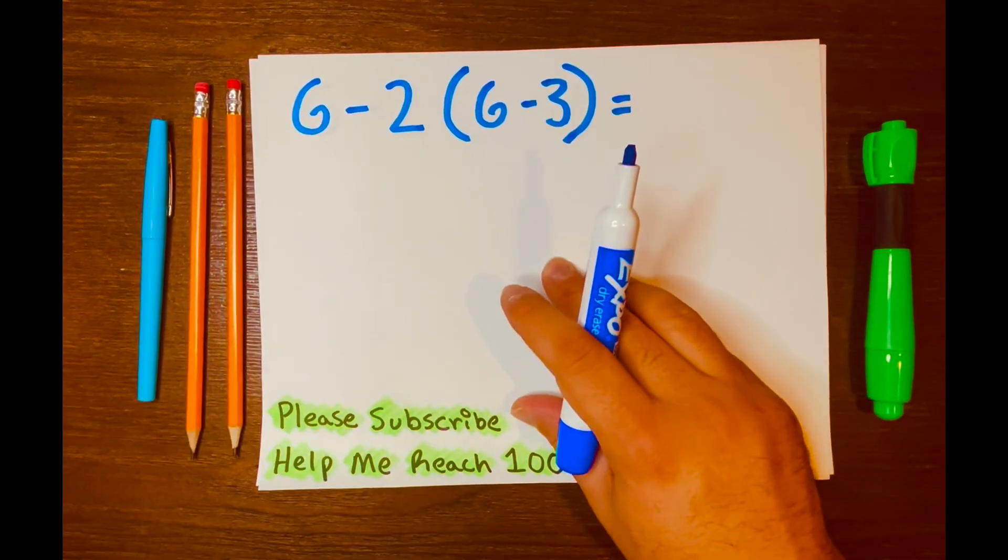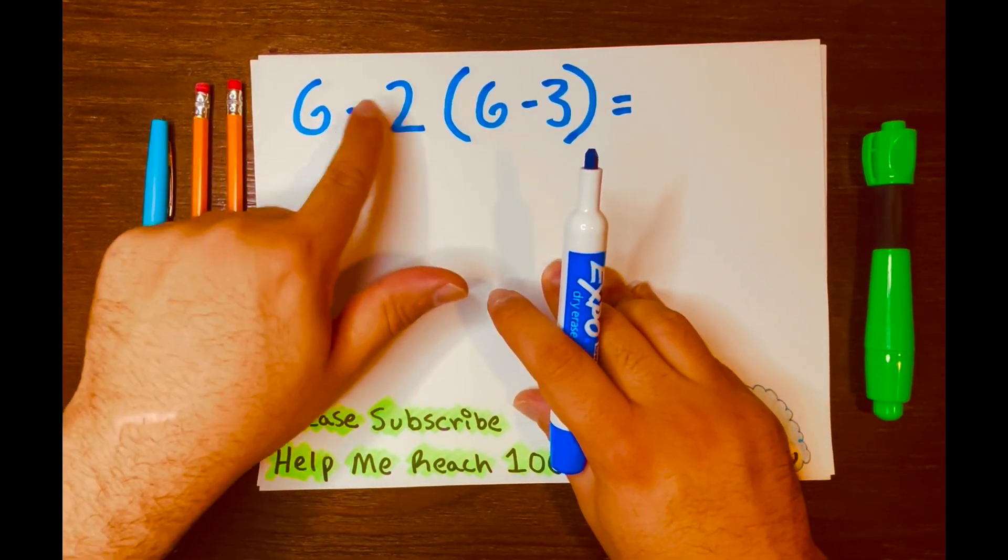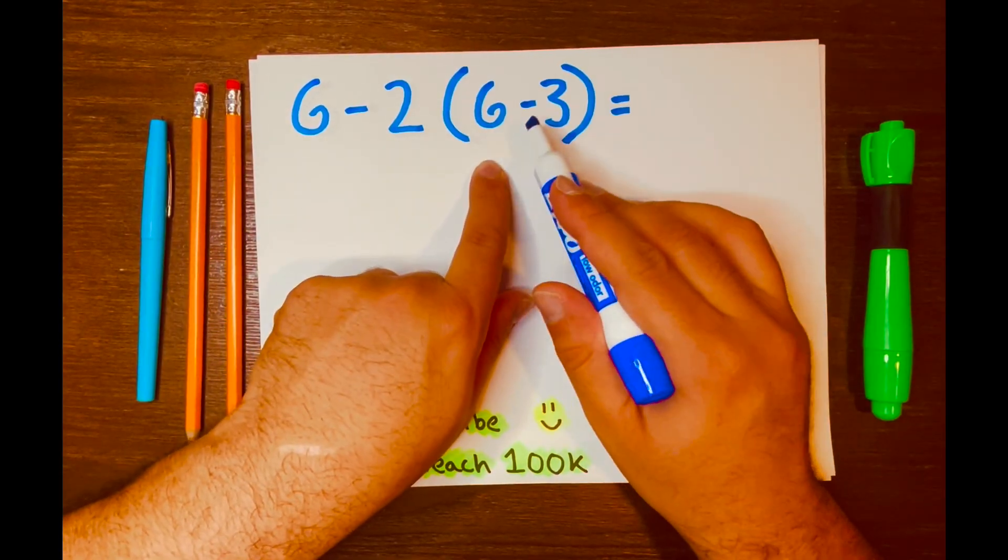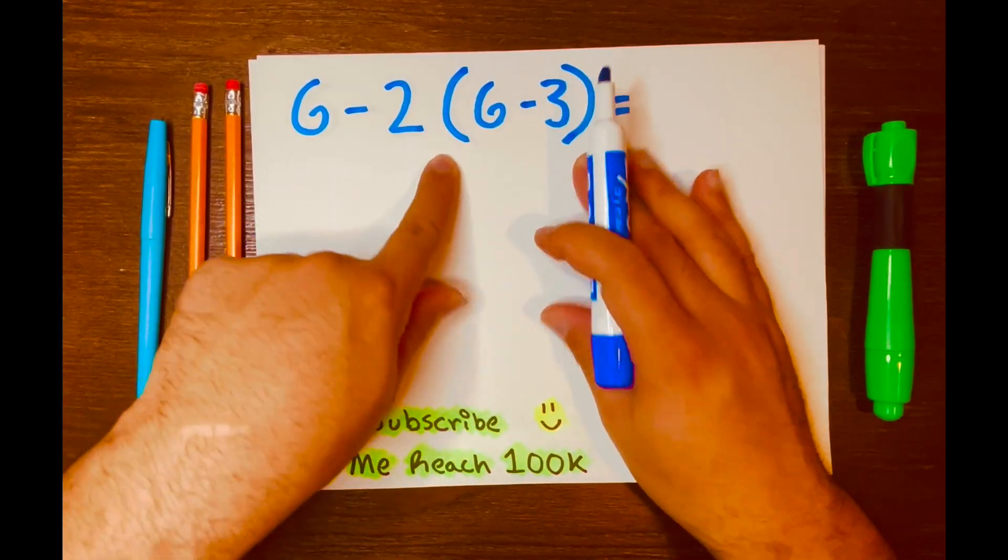Hi, everyone. By the end of this video, you'll be able to solve 6 minus 2, and then you have 6 minus 3 inside these brackets, or in other words, parentheses.